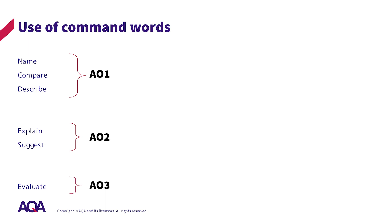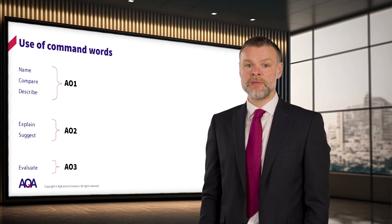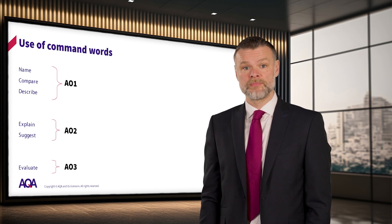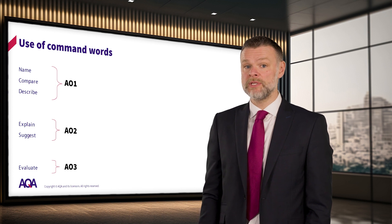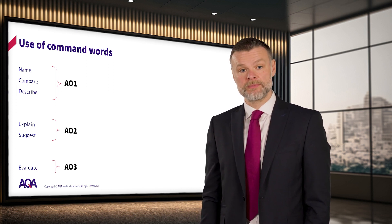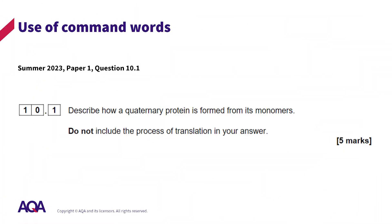In biology there are certain command words that are used regularly. These include 'describe', 'compare' and 'name', which are commonly used to assess AO1. The command words 'explain' and 'suggest' are commonly used to assess AO2, and the command word 'evaluate' is commonly used to assess AO3. The full list of command words and their meanings in biology can be found on AQA's website. Misinterpretation of these command words can result in low marks — for example, a student explaining when they have been asked to describe, or vice versa. As a step on from GCSE biology, two command words can be used in one question in A-level biology, for example 'describe and explain' or 'suggest and explain'. When writing questions, there are occasions when examiners will write a clear command to not include certain content, as shown in this example from paper 1 2023 on screen now. Examiners do this to help students accurately focus their answer.